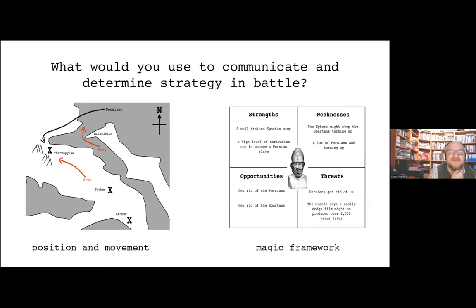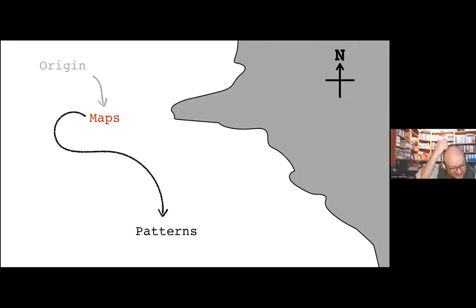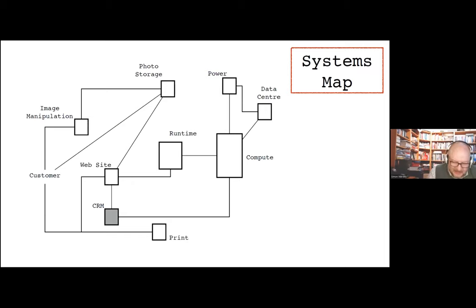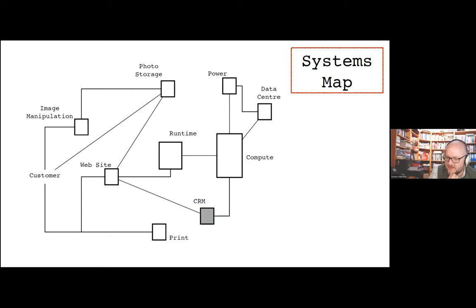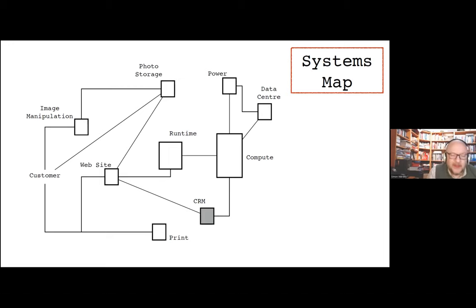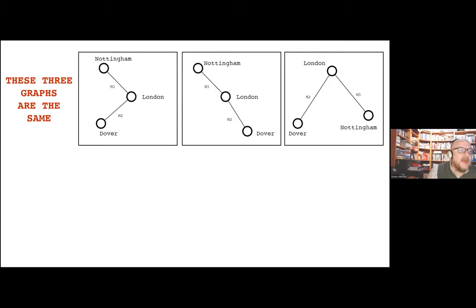It's obvious you'd use position and movement described by a map. Then I looked at my business and realized I was just using these magic frameworks. I asked everyone in the organization to send me all their maps — and people sent loads: customer journey maps, business process maps, systems maps. I took one systems map for the online photo service, moved one component — customer relationship management — across the map and asked how that changed. The answer was: it hadn't changed. That's really odd, because if you shift Australia next to the UK on a geographical map, that definitely changes.